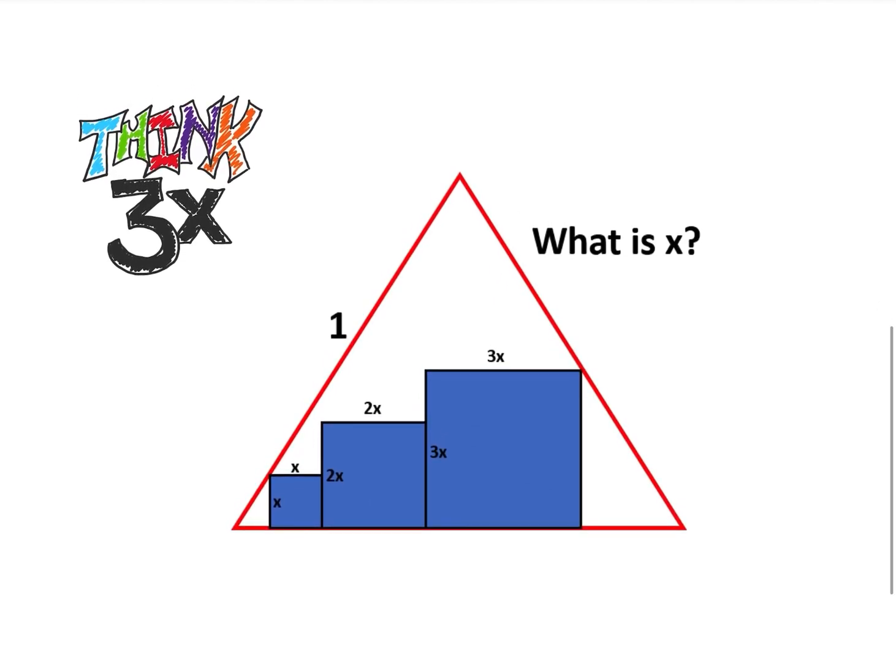So I have an equilateral triangle, and inside the equilateral triangle are three boxes. They're all squares. One is a side length of x, one has a side length of 2x, and one has a side length of 3x.